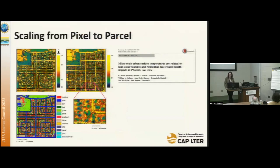Because we work with the human-environment system, we have what's called a people-in-pixels problem, where we use remote sensing data to study these human systems. But it's sometimes very hard to relate the human component to a pixel, because people move around and they don't necessarily live in one pixel. So understanding those impacts through our remote sensing data can be difficult.